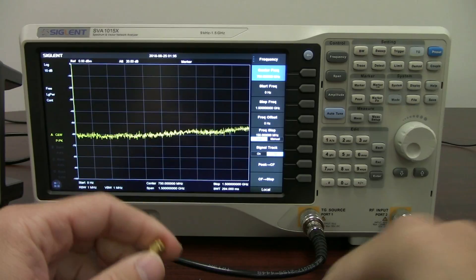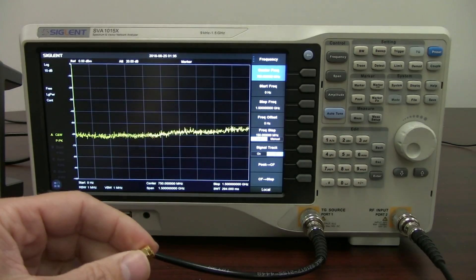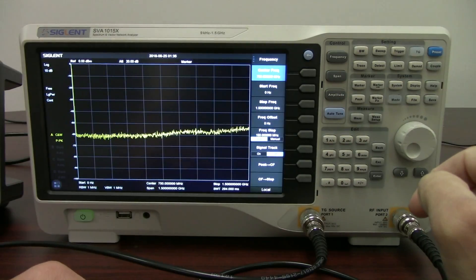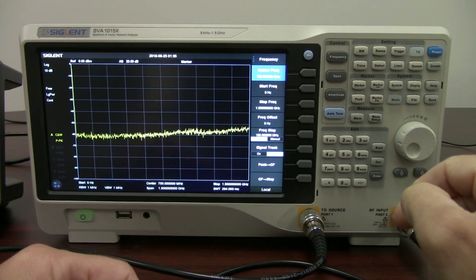So the tracking generator signal is going to be output through this port, through this cable, and then it's going to go through our attenuator. We're going to then measure it with this port, the RF port, and we're going to look at the output on the front panel of the display here.